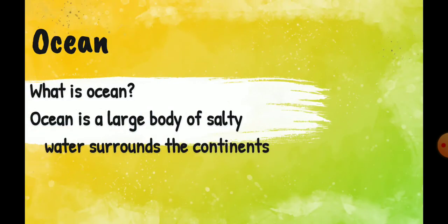Now, what is an ocean? Ocean is a large body of salty water that surrounds the continents. Oceans are bigger than seas, rivers, and lakes. Seas are larger than rivers, and larger than seas are the oceans. Its water is also salty like the sea, and it surrounds the continents — yeh different continents ke ird-girdh hota hai.